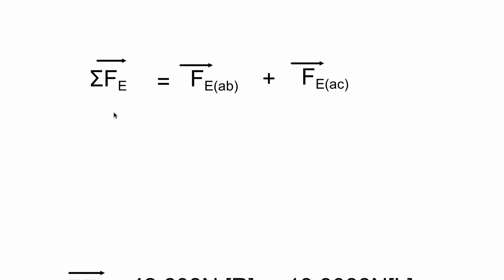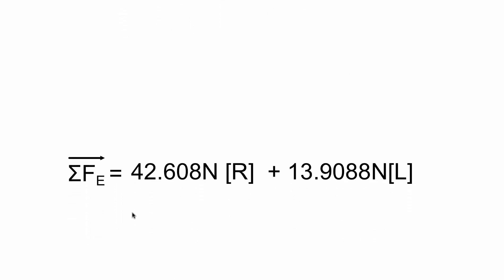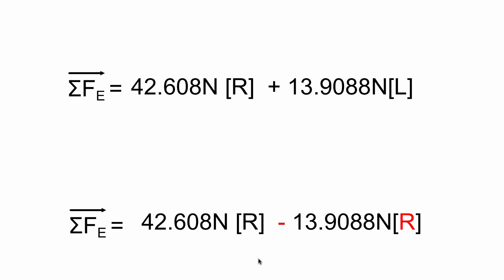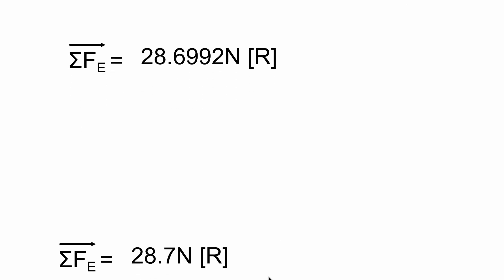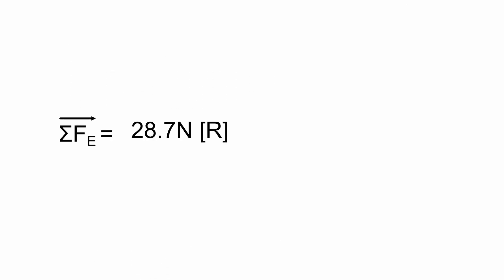Now we combine the two forces. The sum of all forces equals the Coulomb force between A and B plus the force between A and C. The A-B force was 42.608 newtons to the right, and the A-C force was 13.9088 newtons to the left. That's the same as 42.608 minus 13.9088, which gives us 28.6992 newtons to the right. Since our question only has three sig figs, our final answer is 28.7 newtons towards the right.